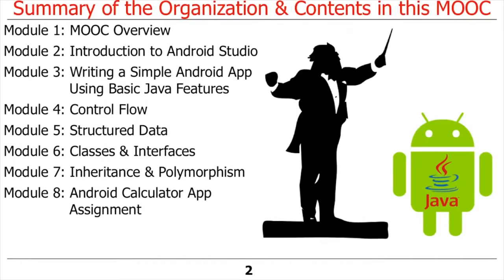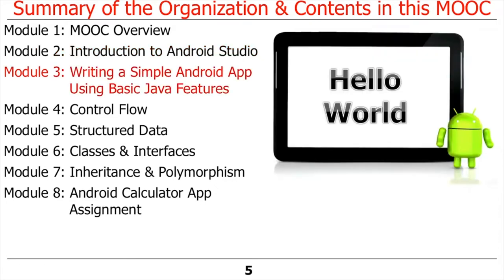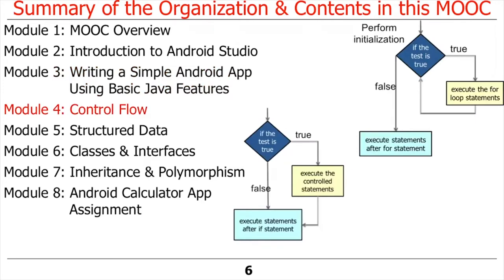We'll start by summarizing the MOOC contents. The second module presents an introduction to Android Studio, explaining how to install it and apply it to develop simple apps. The third module shows how to write simple Android apps using methods to define variables with primitive Java data types, assign values to those variables, and output them to the Android display. Module 4 covers Java features that control the flow of execution, including for loops, while loops, do-while loops, and conditional execution constructs such as if-else statements.